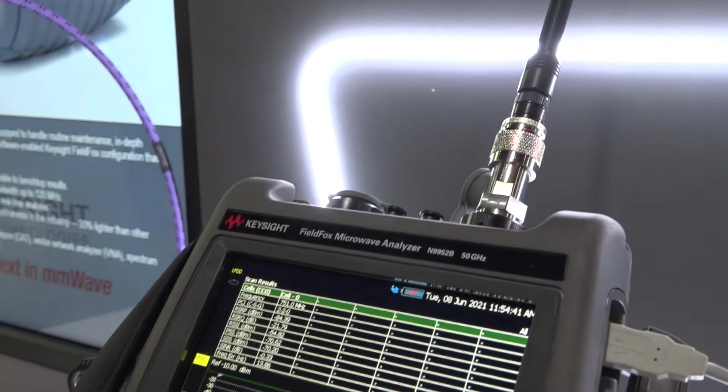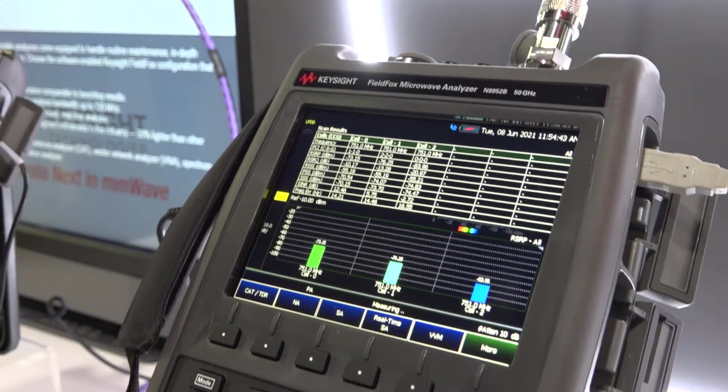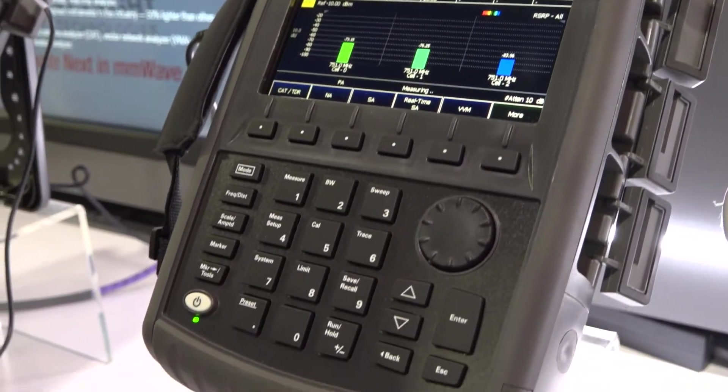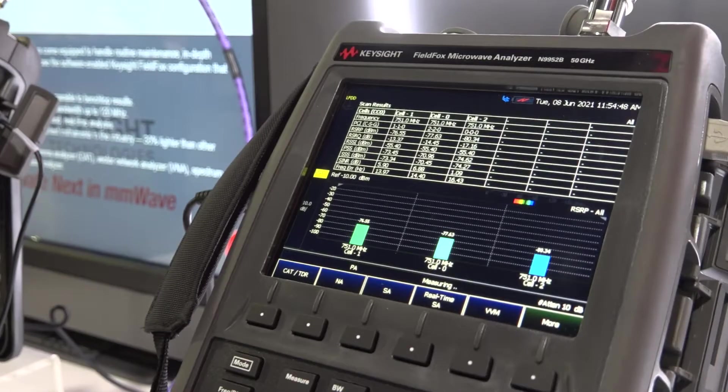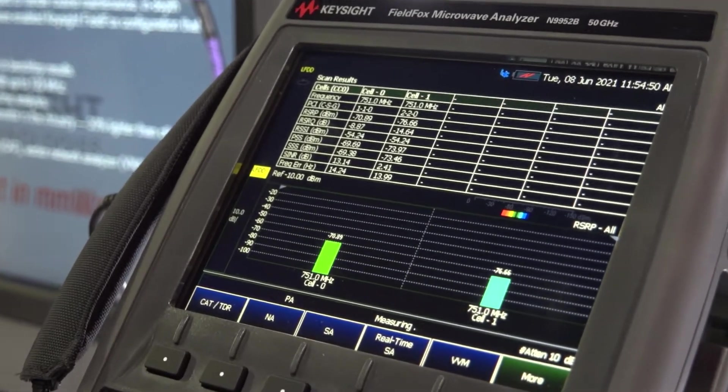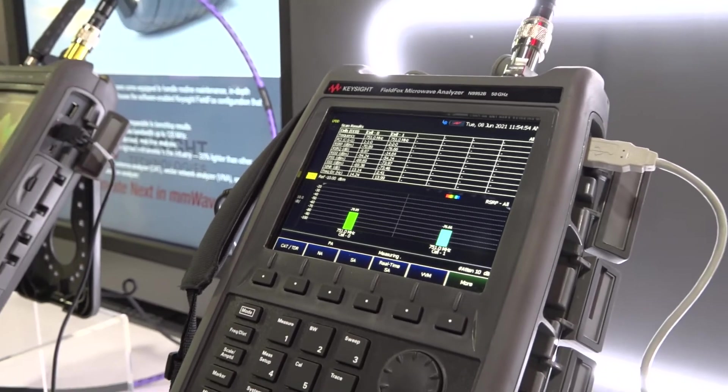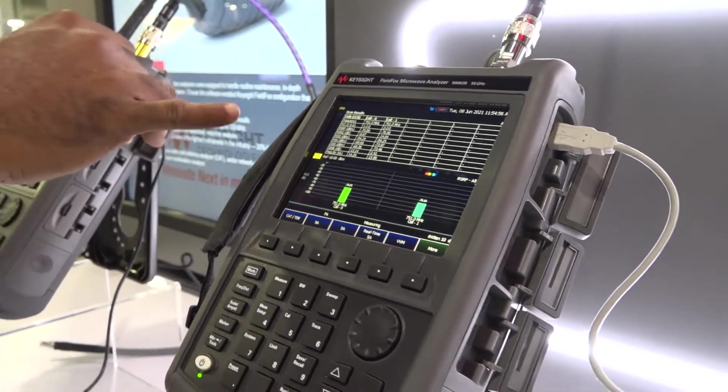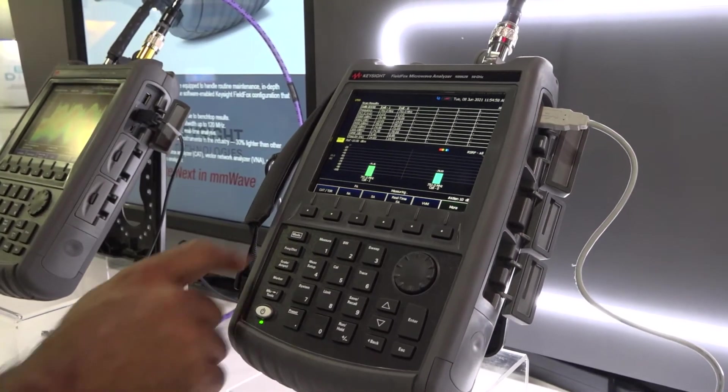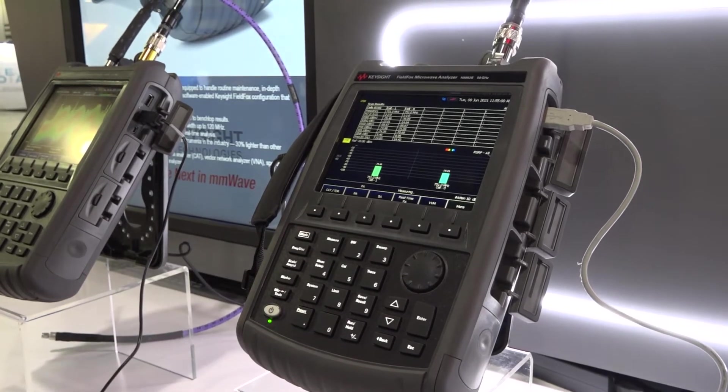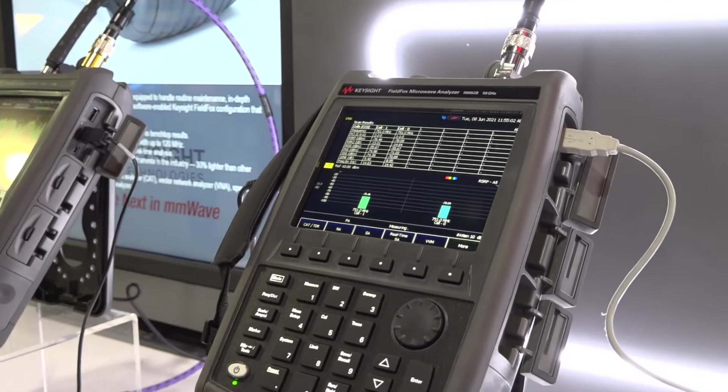So this is the next generation of the analyzer. This is actually a 50 gigahertz system. Right now we're looking at the LTE band and looking at the different cell IDs that are popping into screen. So we're doing over-the-air testing, capturing signals off the air, and doing signal power measurements and some quality measurements for LTE. Just as the lower frequency brother, this one has all the measurement modes as well.